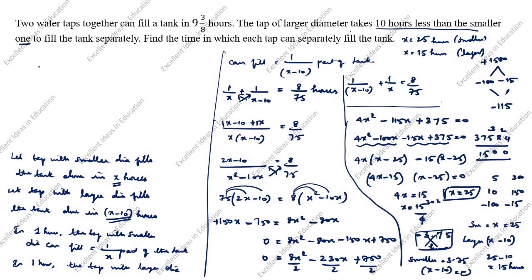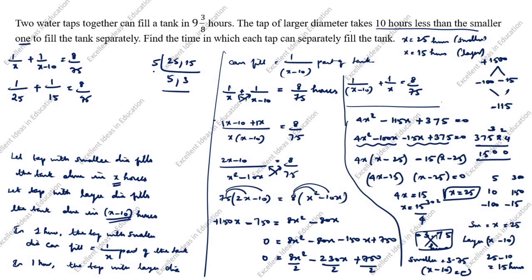Now we will check the answer. Substituting into 1/x + 1/(x minus 10) = 8/75: 1/25 + 1/15. Taking LCM of 25 and 15: 5 × 5 = 25, 5 × 3 = 15, so LCM = 75. This gives 3/75 + 5/75 = 8/75. The left-hand side equals 8/75, which matches the right-hand side. The answer is correct.